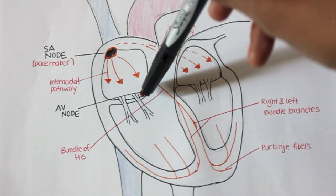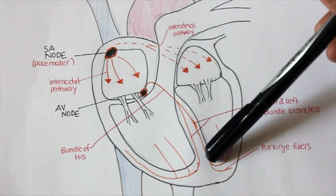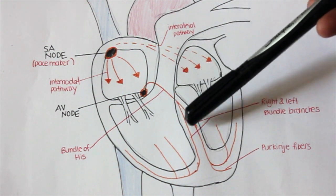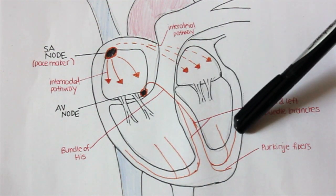Then it travels through the bundle of His and down the interventricular septum, traveling down the right and left bundle branches. It splits into two sides so that it can go to both sides of the heart.